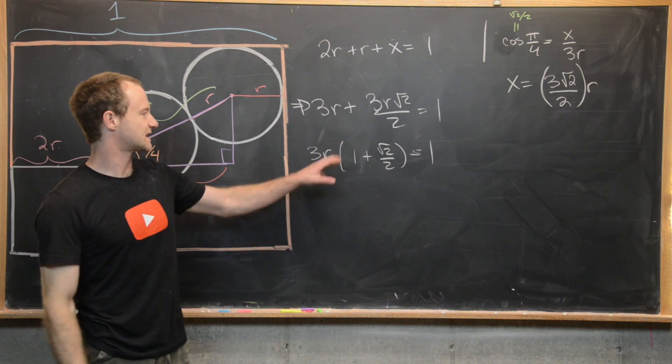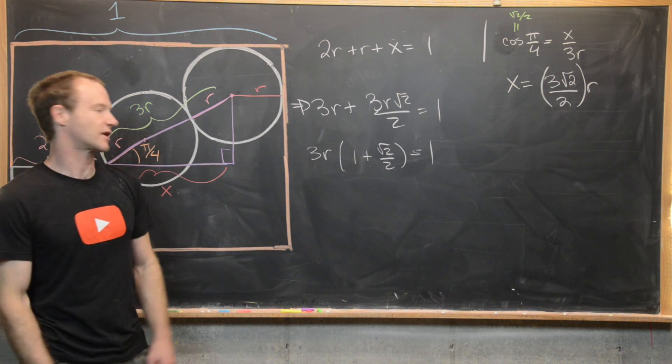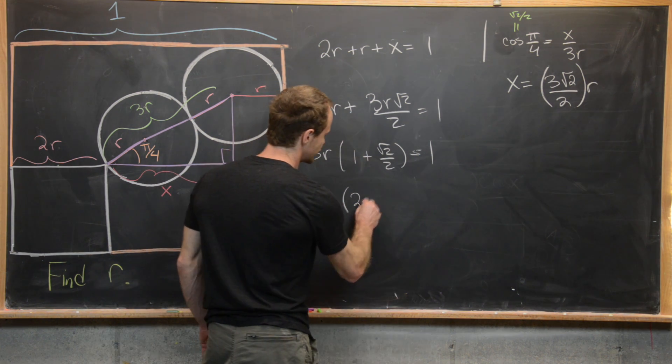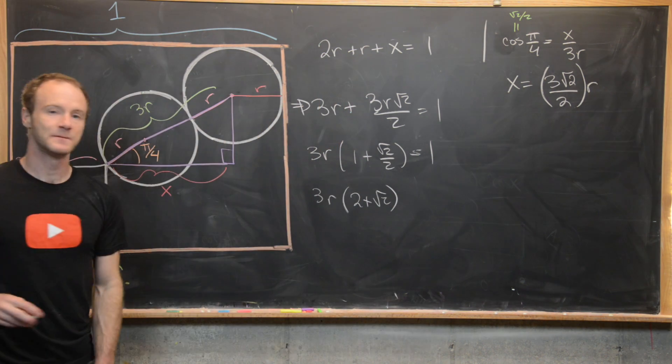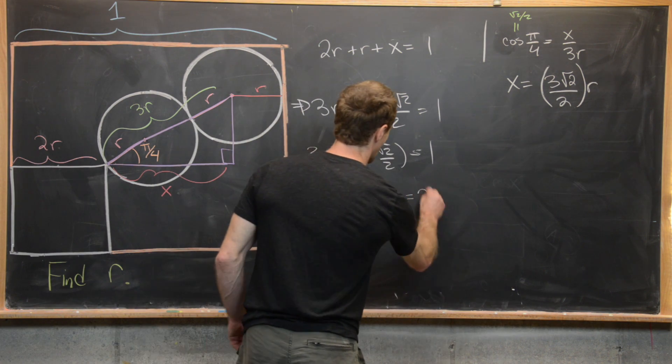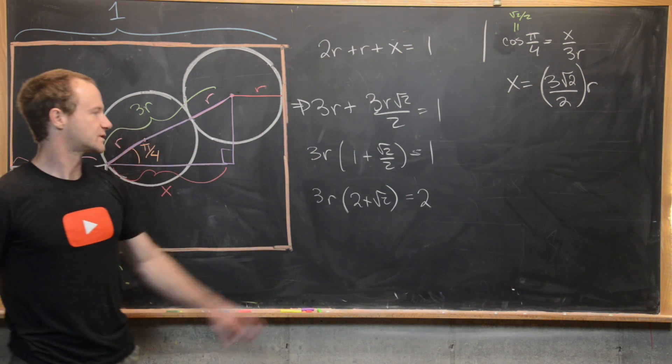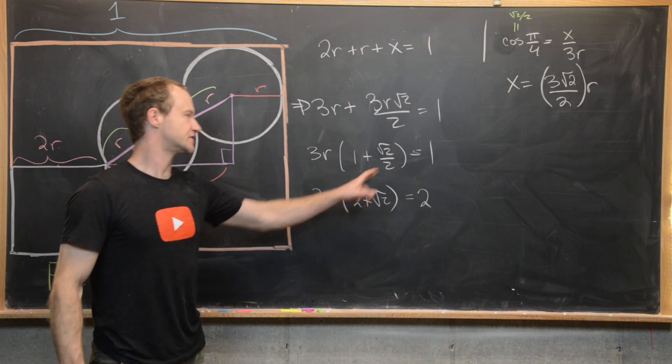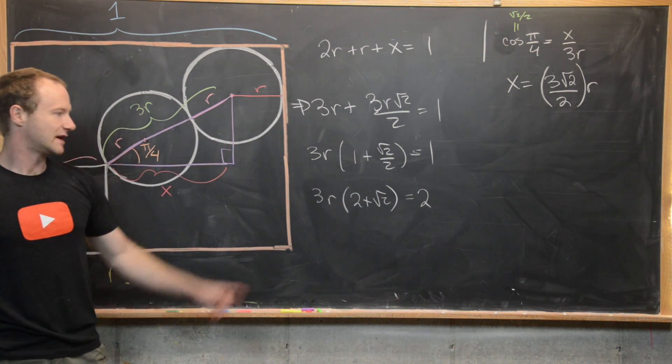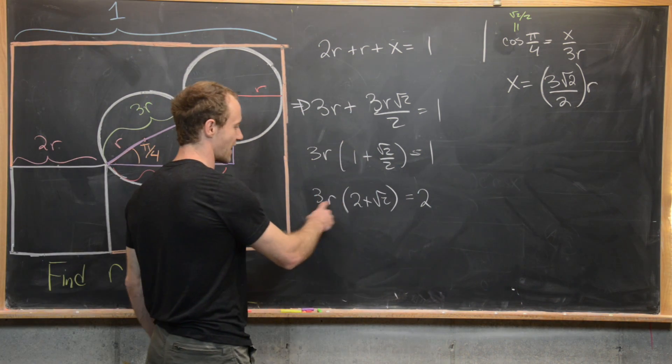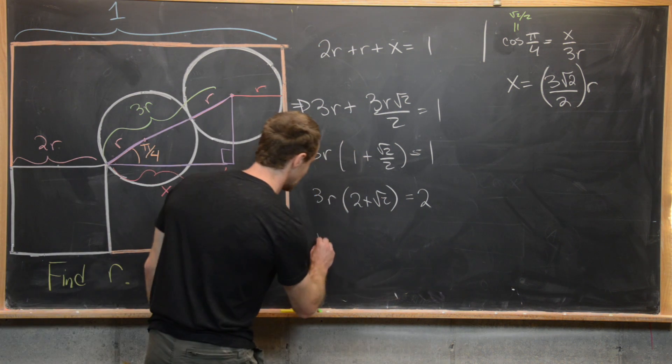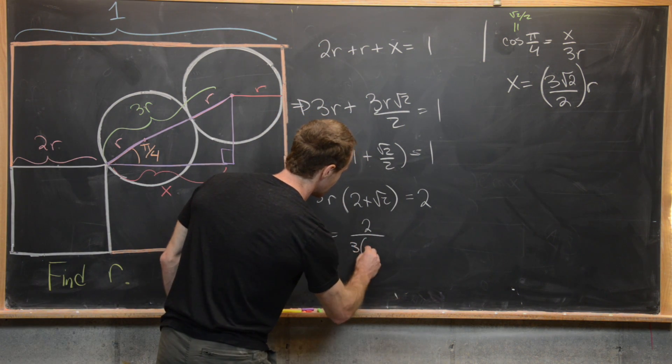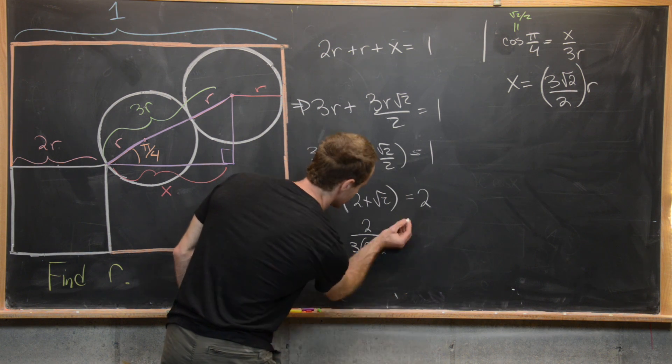Now maybe we can multiply both sides of this equation by 2 in order to clear the fractions. That's going to give us 3r and then 2 plus √2 on the left-hand side, and then we'll have 2 on the right-hand side. So again, multiplying this by 2 clears that fraction, turns this 1 into a 2 and this 1 into a 2. Now let's see what we can do. Now we can divide by 3 times (2 plus √2). So that's going to give us r equals 2 over 3 times (2 plus √2).